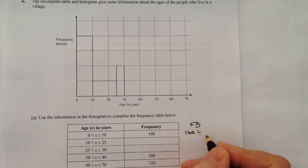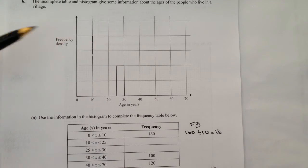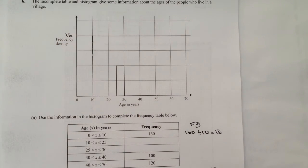So what that's telling me is that on my frequency density histogram here, this measurement must be 16 because it's my first bar, my class width of 10, which is great.